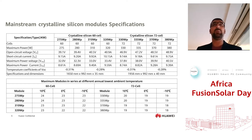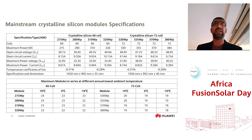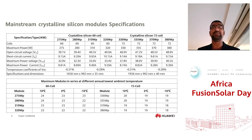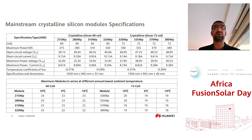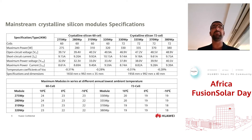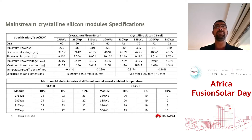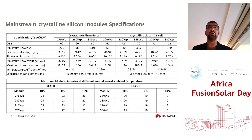For example, with a 60-cell module — a 280 watt PV module — you can see the Vmpp and also the temperature coefficient Voc value taken from the datasheet. Based on those two parameters you can calculate exactly how many modules per string. With a minimum temperature of 10°C, you can comfortably connect 24 PV modules in a string.